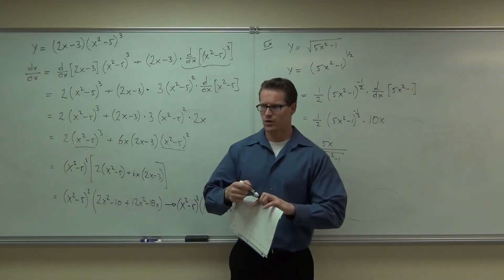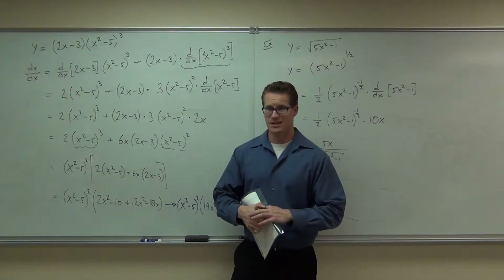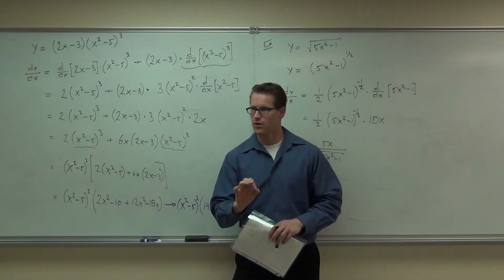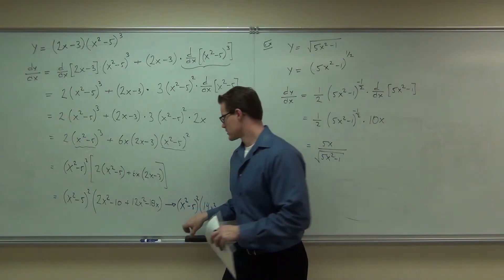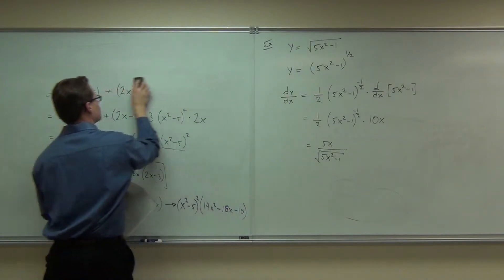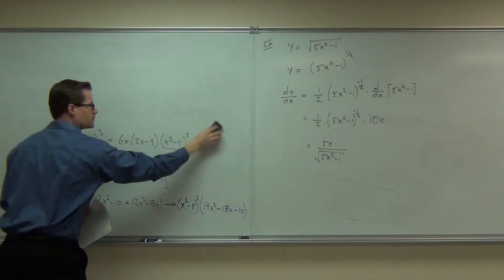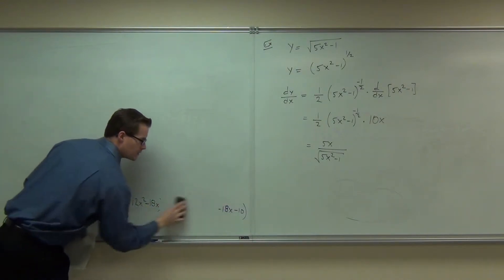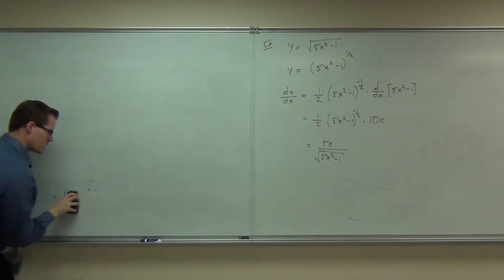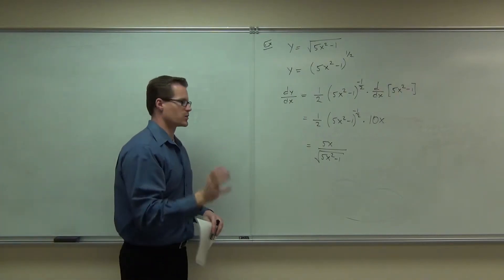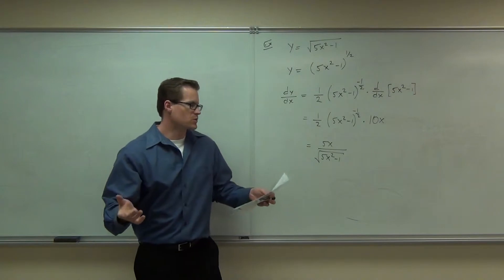Are you ready to move on from the general power rule? Because that's about all I can show you with that. I mean, it doesn't change after this. If you can do these couple problems, you're okay so far. Are you okay so far? What do you mean in an exponential form still be acceptable? If it's given to you that way. What I'm expecting most of the time is if I give it to you as exponents, exponents are fine. If I give it to you as roots, change it back to roots.